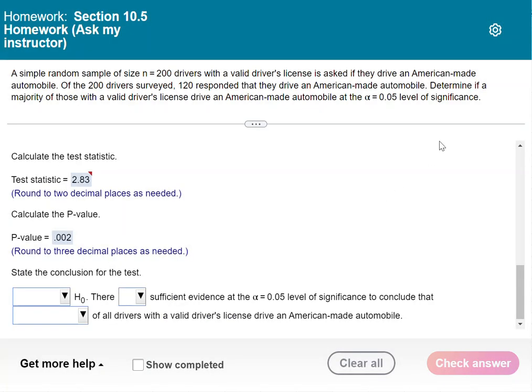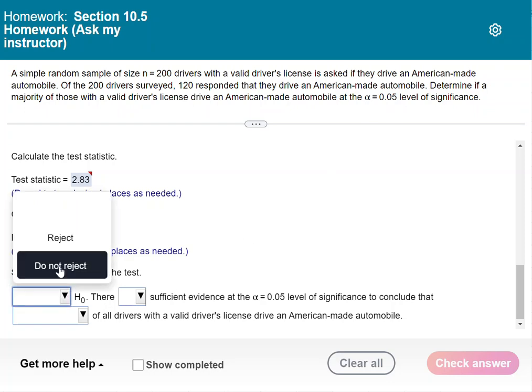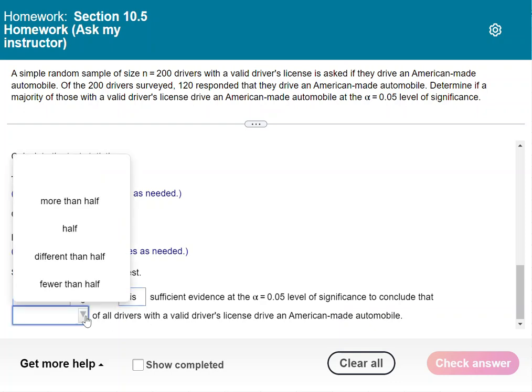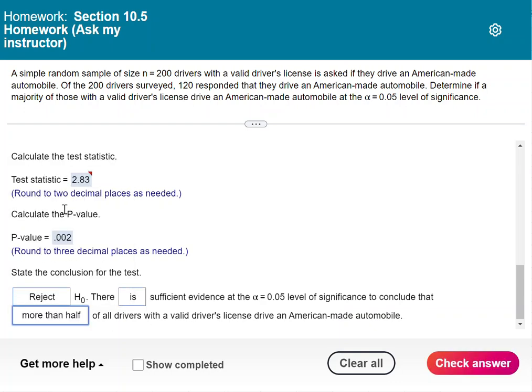So notice that is less than 0.05. And so we are going to reject the null hypothesis because of that, because it is less than our level of significance. There is sufficient evidence at the 0.05 level to conclude that more than half of all drivers with a valid driver's license drive an American-made automobile.